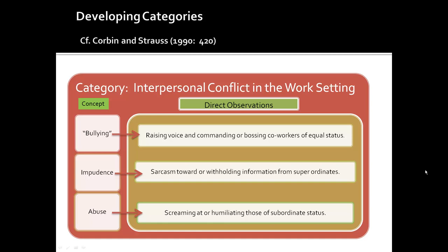The category 'interpersonal conflict in the work setting' comes from a student paper from the fall of 2012. The direct observations — raising one's voice and commanding or bossing co-workers of equal status — shape the concept 'bullying.' Bullying, impudence, and abuse are concepts that inform the category of interpersonal conflict in the work setting.